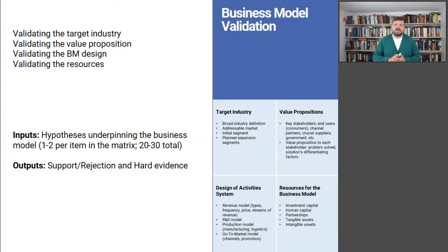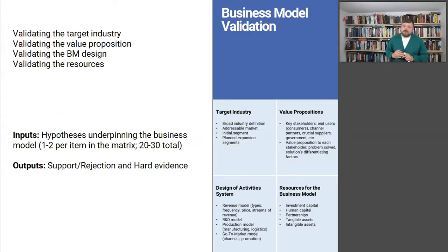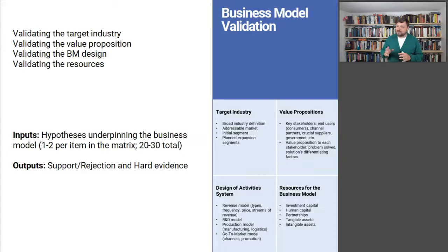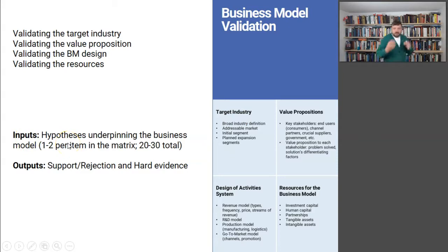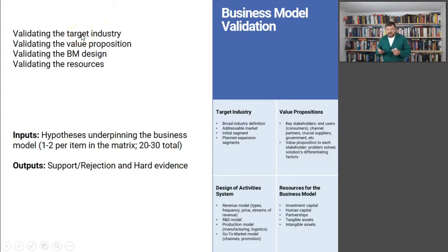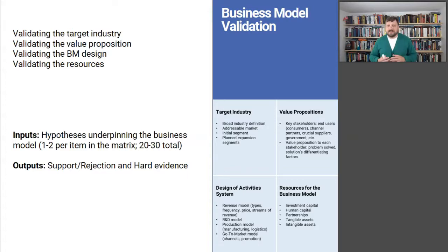For business model validation, you can present your business model using any convenient framework — the business model canvas, my four-quadrant framework, lean startup canvas, whatever works. Look at your business model and think about what are the key hypotheses that underpin it. Validating the target industry is all about: is the industry large enough? Is it approachable? What are the entry barriers? Maybe the whole industry is monopolized and you simply cannot get in.